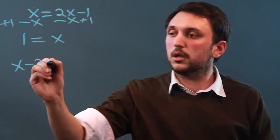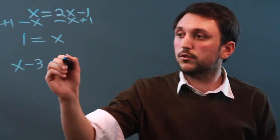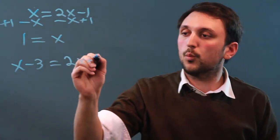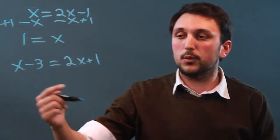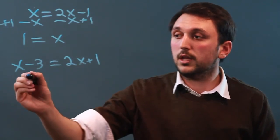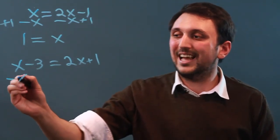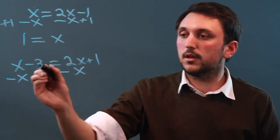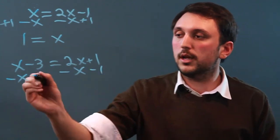x minus 3 equals 2x plus 1. And here, same deal, we want all the numbers on one side and all the variables on the other. So here I'm going to subtract x and subtract x, and I'm going to subtract 1 and subtract 1.